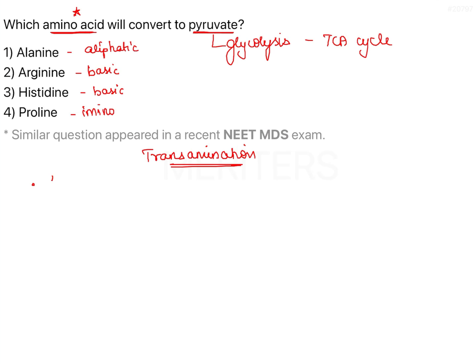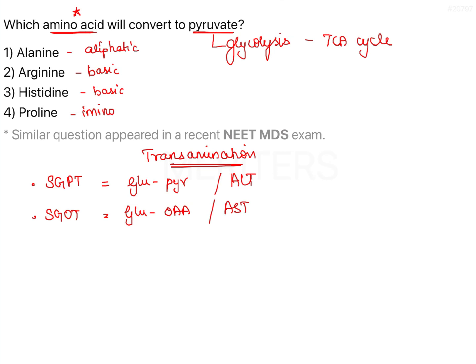The two important transaminases are SGPT and SGOT. SGPT stands for Serum Glutamate Pyruvate Transaminase, also known as ALT. SGOT stands for Serum Glutamate Oxaloacetate Transaminase, also known as AST, which stands for Alanine Transaminase and Aspartate Transaminase respectively.